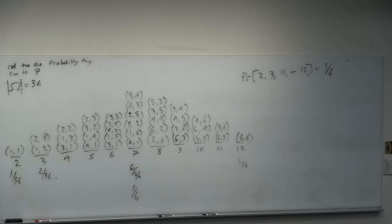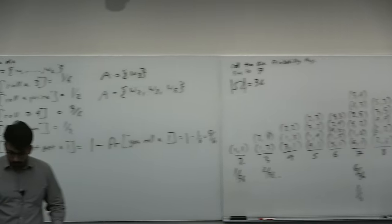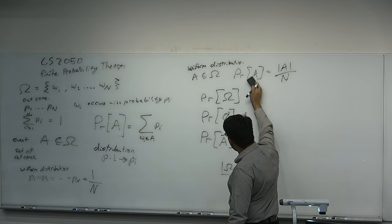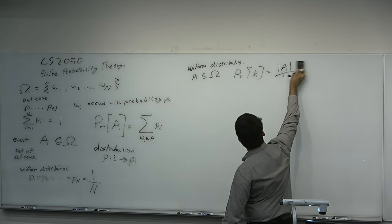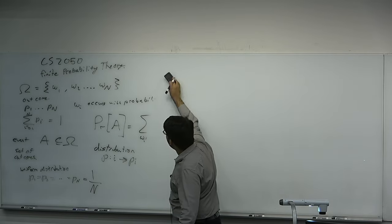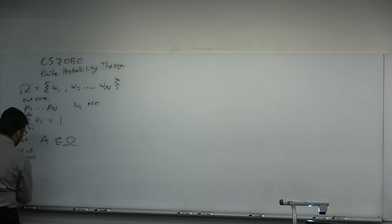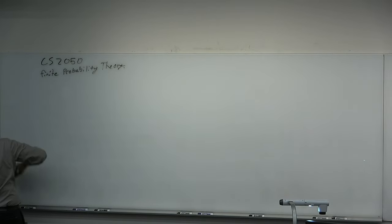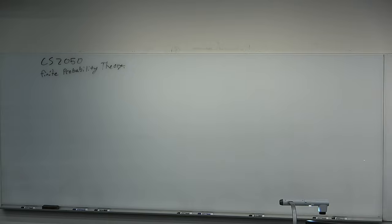One of the reasons probability theory was invented was because a guy — I think it was Cardano or something — he could not stop gambling, putting odds on everything. Probability theory was invented to make a science of uncertainty. Uncertainty is when you don't know something but want a good estimation. With that in mind, let's consider a slot machine.